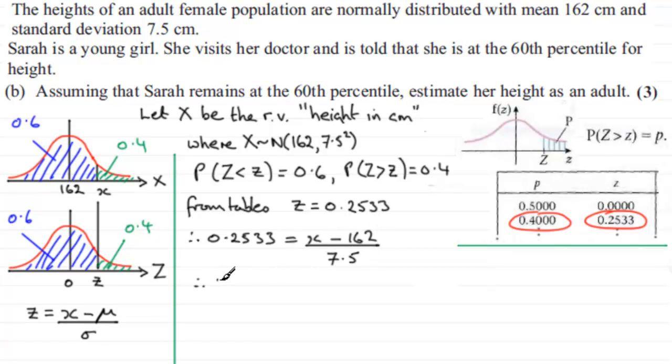To get X, all I've got to do is multiply both sides by 7.5. That will give me 7.5 multiplied by 0.2533, and then add the 162. And if you work that out, you'll find you get 163.899 and so on. And if we round this to one decimal place, that's going to be 163.9, and the units would be centimeters to one decimal place.